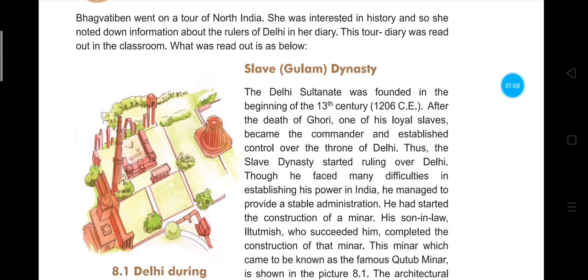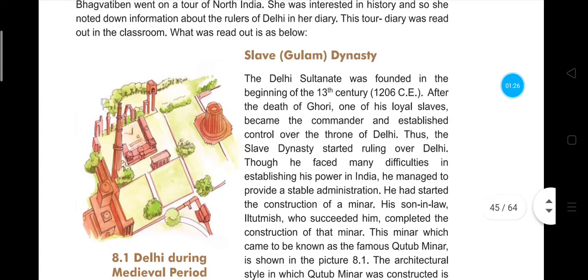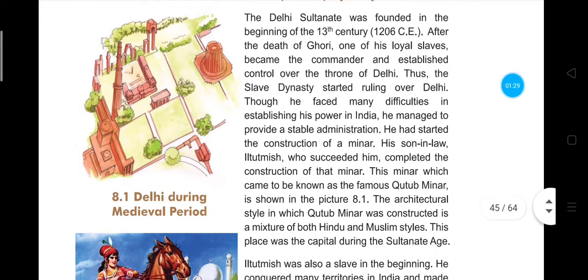After the death of Shahbuddin Muhammad Ghori, his chief commander Kutubdin Ebak established the slave dynasty on the throne of Delhi. Though he faced many difficulties, he managed good administration and started the construction of a minar in his honor — named Kutub Minar. It was started by Kutubdin Ebak but completed by Iltutmish.